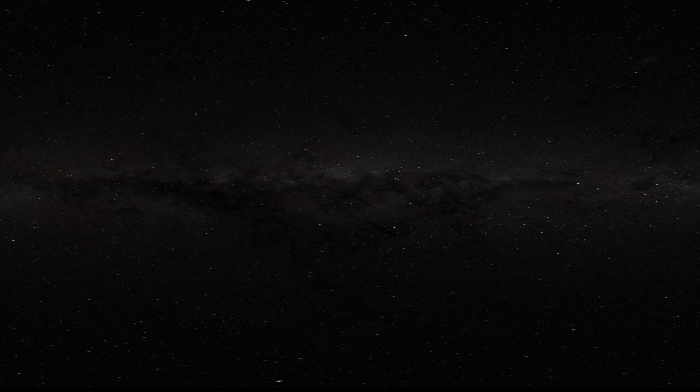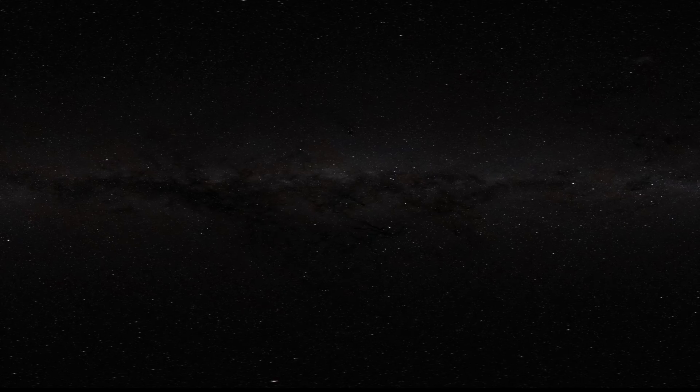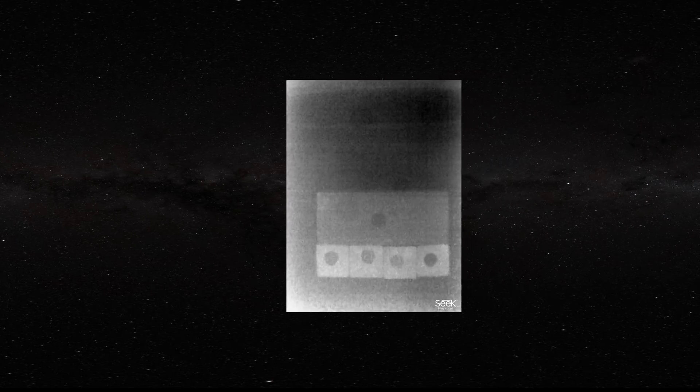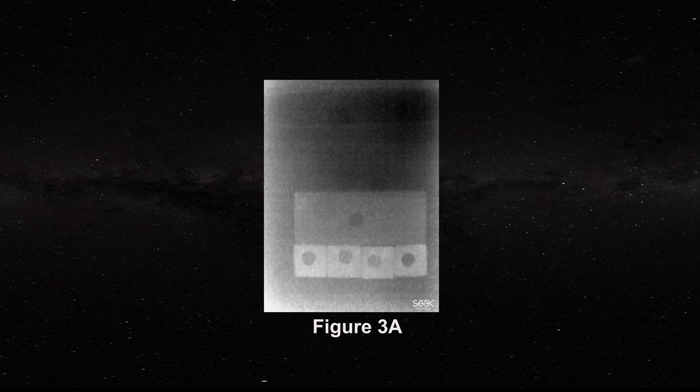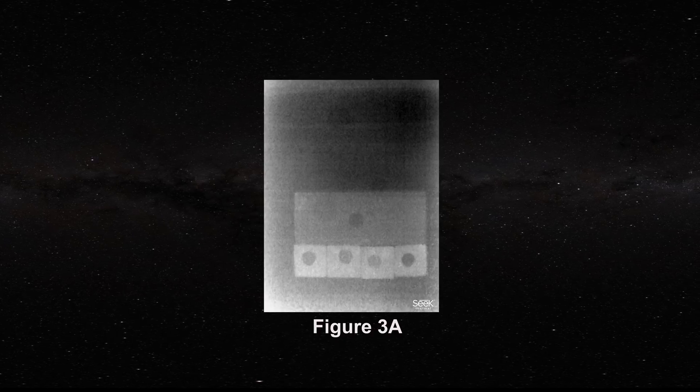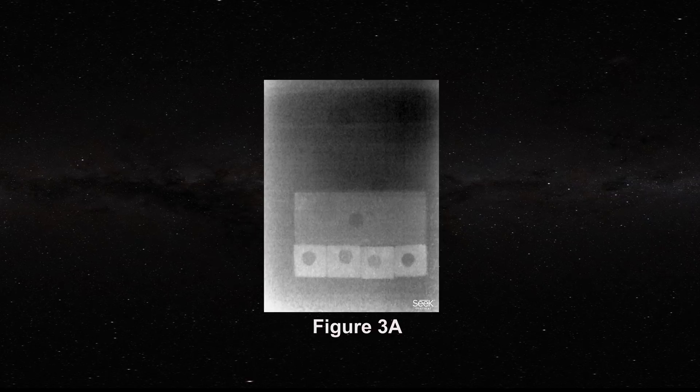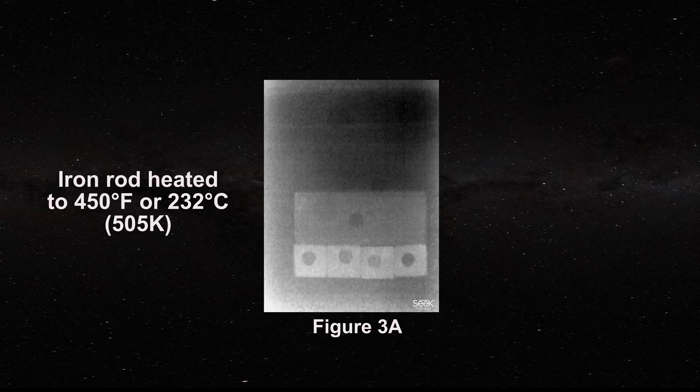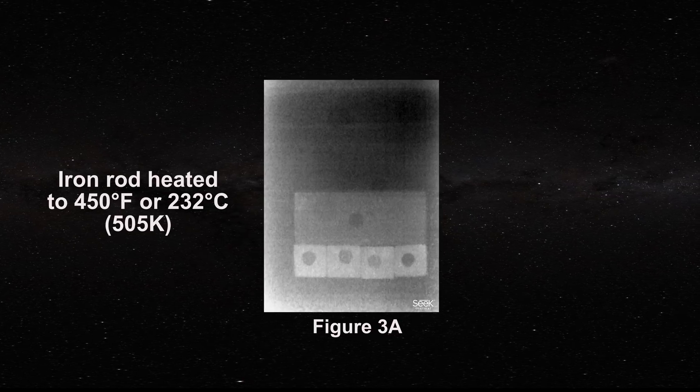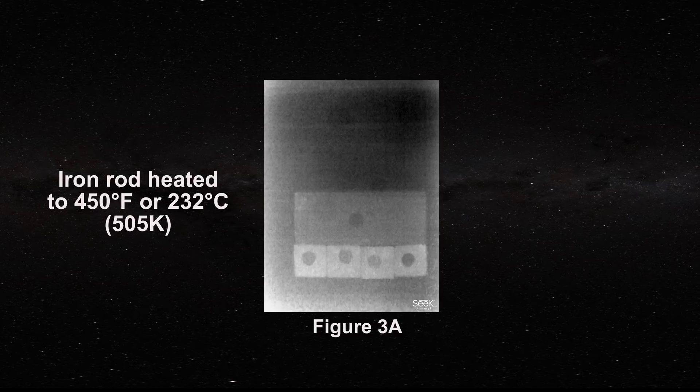For the next part of the experiment we switch the camera to white mode. Now the holes all appear black. Next we challenge the holes by bringing a heated galvanized steel rod above them. The rod had been heated to 450 degrees Fahrenheit. That corresponds to 232 degrees Celsius or 505 Kelvin.